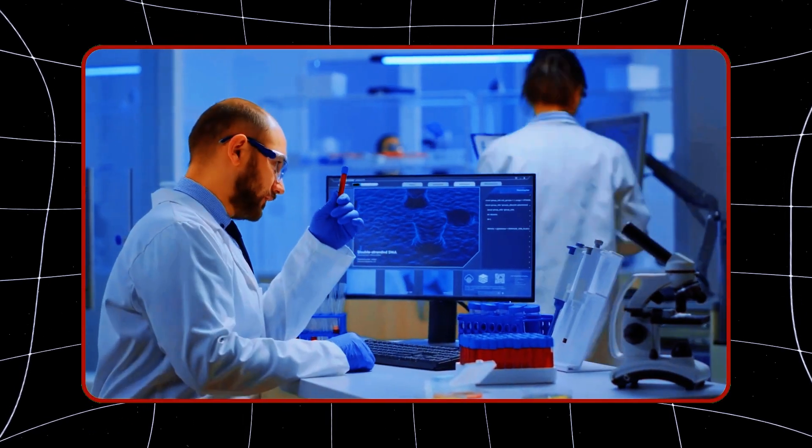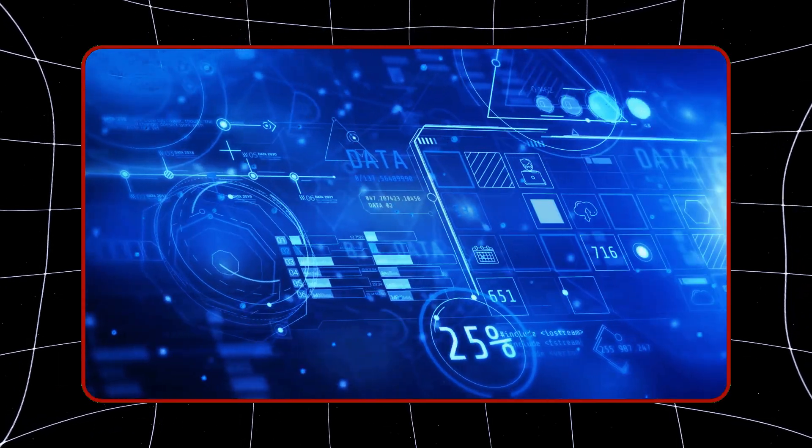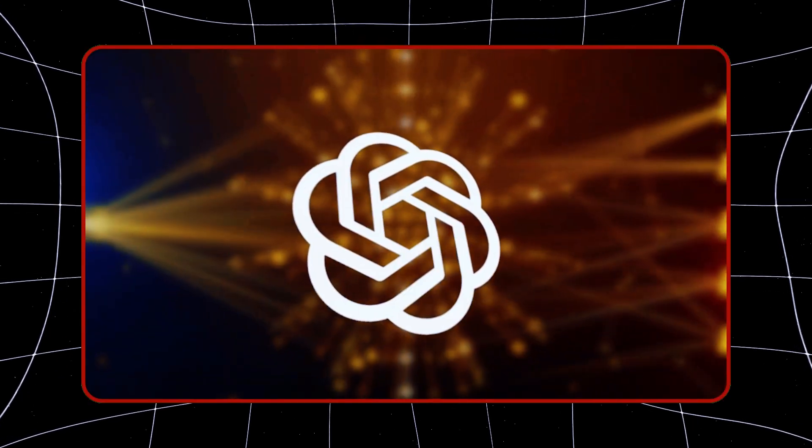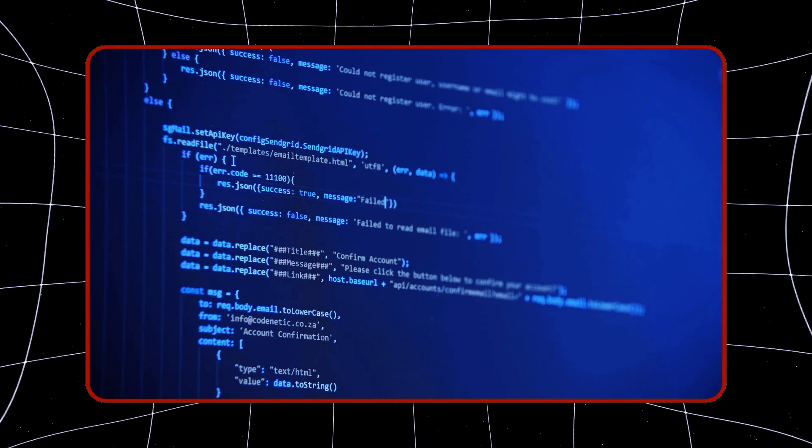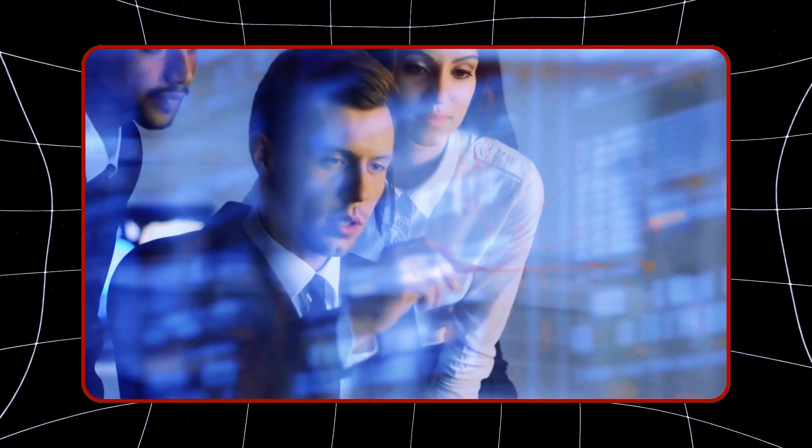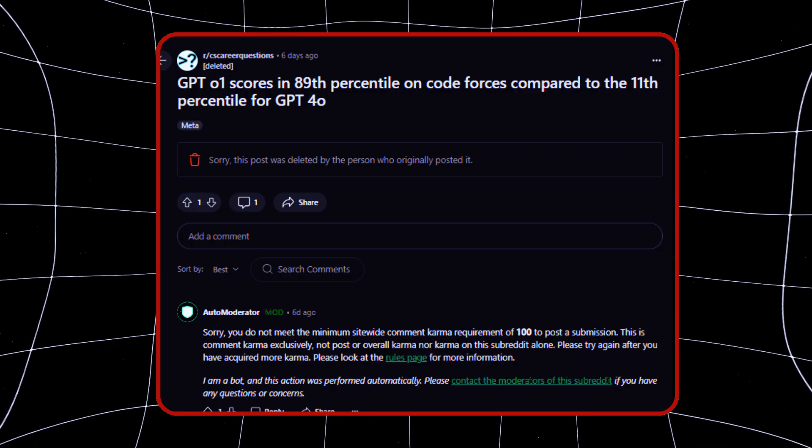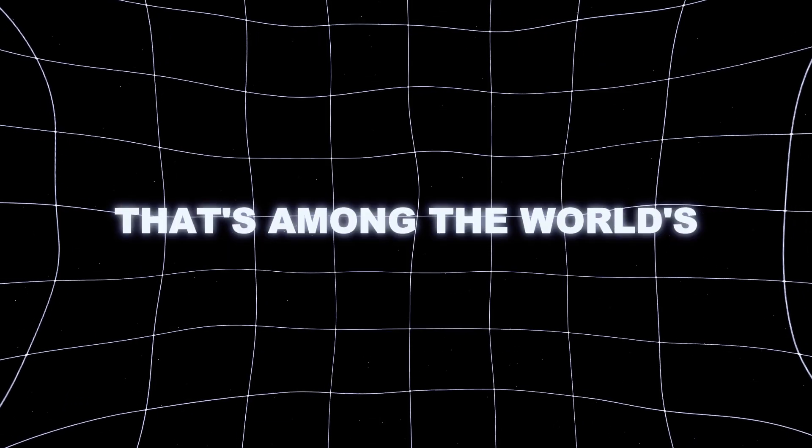And the breakthroughs don't stop there. O1 Mini, which is 80% cheaper than its more powerful sibling, can still handle highly complex tasks, especially in fields like coding. In fact, in coding competitions like Code Forces, it ranked in the 89th percentile. That's among the world's best programmers.